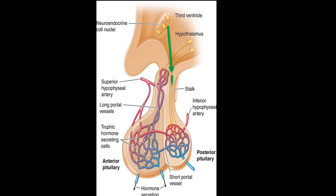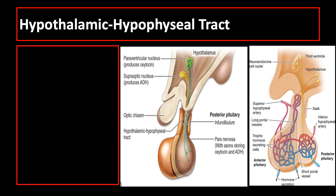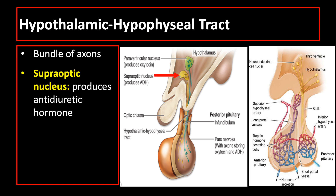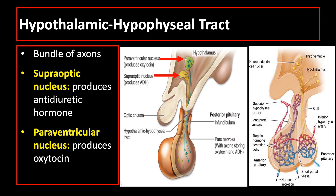The pituitary gland's neural connection to the brain and its blood supply are both of key importance for its function. Embryologically, anatomically, and functionally, the pituitary gland is connected to the hypothalamus. In addition to the vascular portal system carrying small regulatory peptides from the hypothalamus to the adenohypophysis, a bundle of axons called the hypothalamic-hypophysial tract courses into the neurohypophysis from two important hypothalamic nuclei: the supraoptic nucleus, which synthesizes antidiuretic hormone or vasopressin, and the paraventricular nucleus, which synthesizes oxytocin.